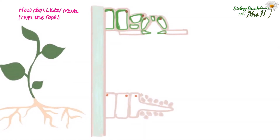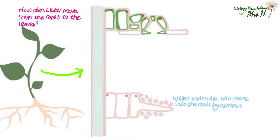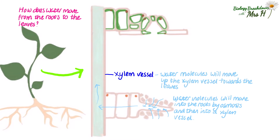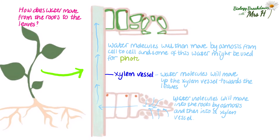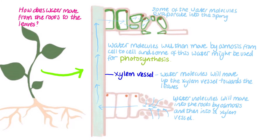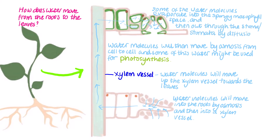How does water move from the roots to the leaves? Water molecules move into the roots by osmosis from the soil, and then from cell to cell by osmosis until they reach the xylem vessel. Water molecules then move up the xylem vessel towards the leaves, and then move by osmosis from cell to cell in the leaf. Some of this water may evaporate into the spongy mesophyll space and then out of the stomata by diffusion. This continuous movement of water molecules from the roots to the leaves is called the transpiration stream.